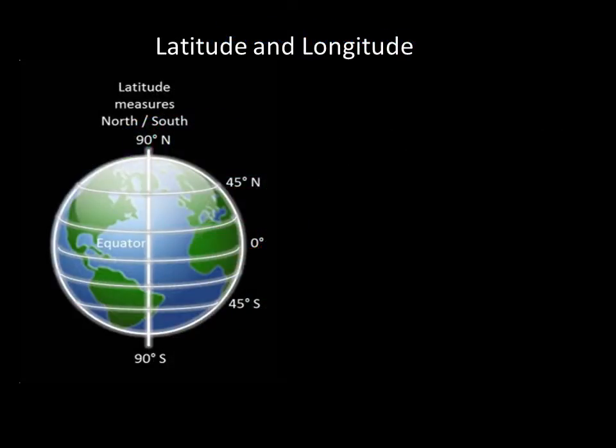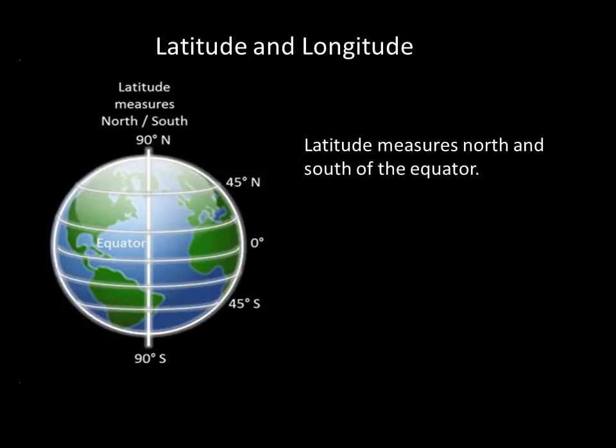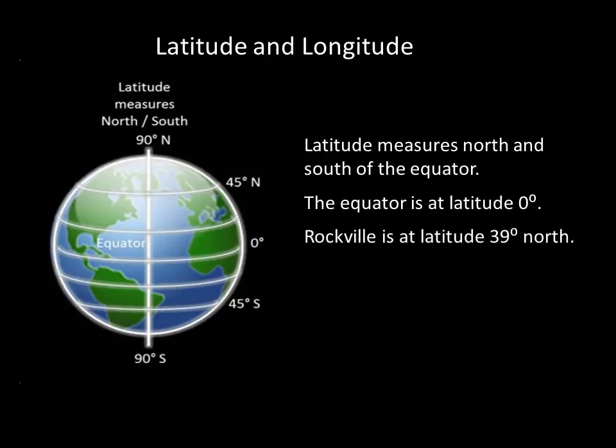Before we go any further, let's take a moment to consider coordinate systems. You already know about the geographic coordinates of latitude and longitude for locations on the globe of Earth. Latitude measures north and south from the Earth's equator. The latitude at the equator is zero degrees. If you move north, your latitude increases. Walking from the equator to Rockville, Maryland takes you from zero degrees latitude to plus 39 degrees north. If you keep walking all the way to the North Pole, your latitude will be 90 degrees north.